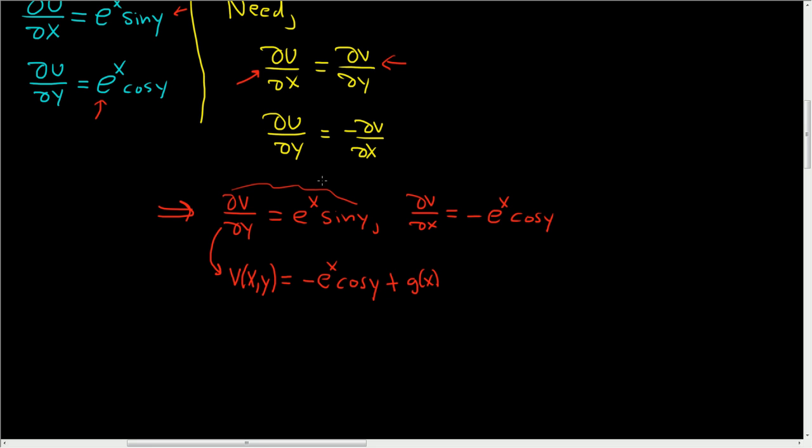We've used this first condition. Now we use this one. We need to find the partial of v with respect to x. We differentiate: del v del x equals—the cosine is constant—minus e to the x cosine y plus g prime of x.